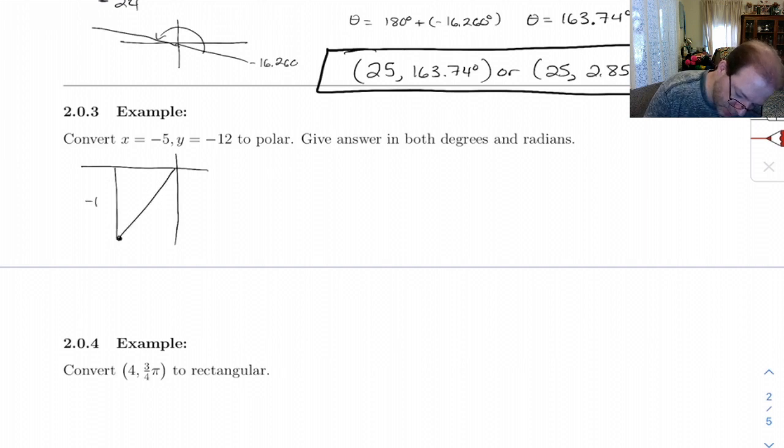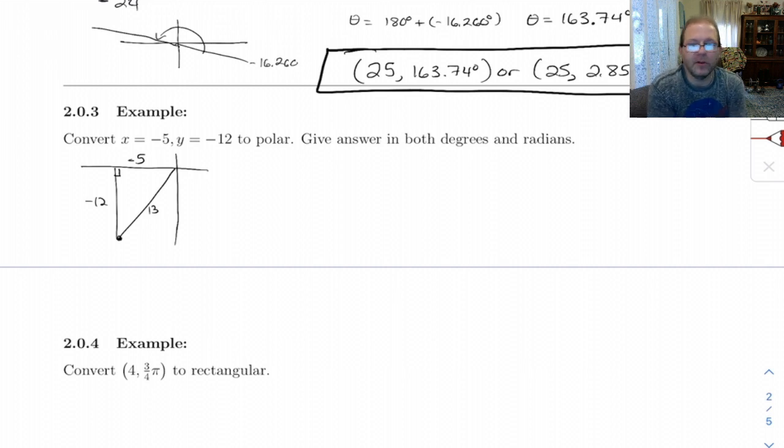So negative 12, negative 5, and that's a nice Pythagorean triple. So the hypotenuse is going to be 13.